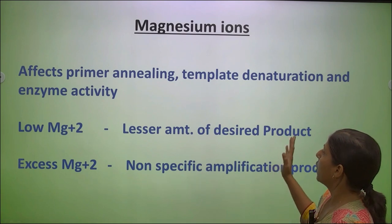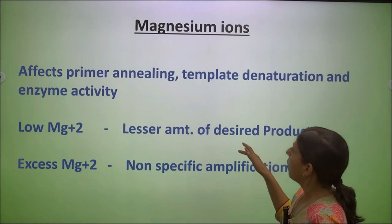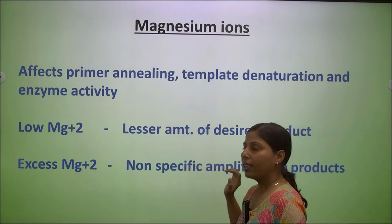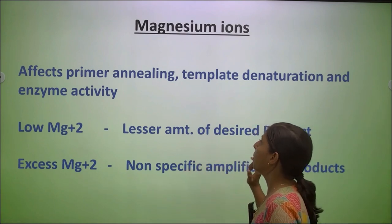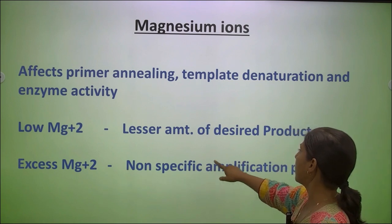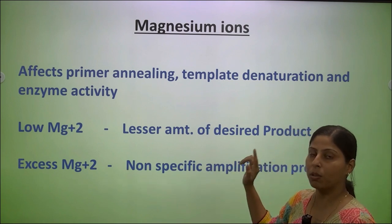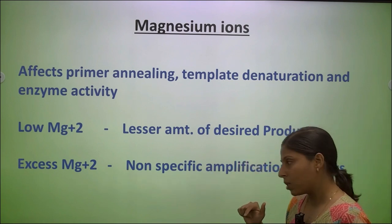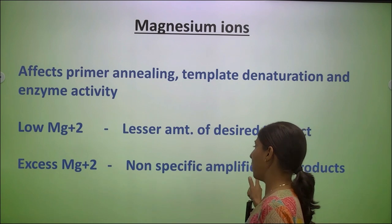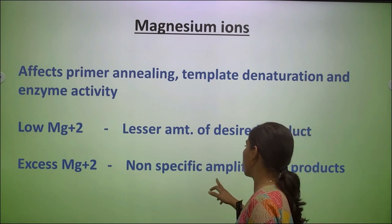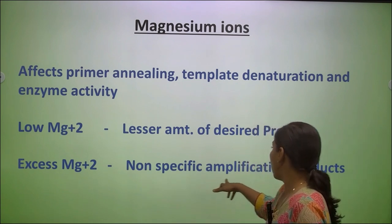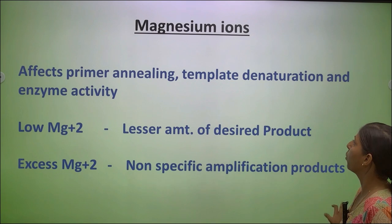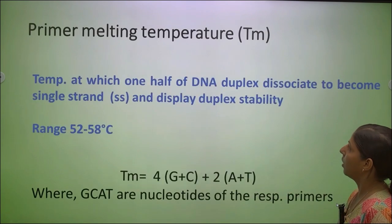Magnesium ion concentration significantly affects the PCR reaction. A low Mg²⁺ concentration will produce a lesser amount of the desired product. A higher Mg²⁺ concentration will lead to non-specific amplification. Therefore, magnesium ion concentration is very important.